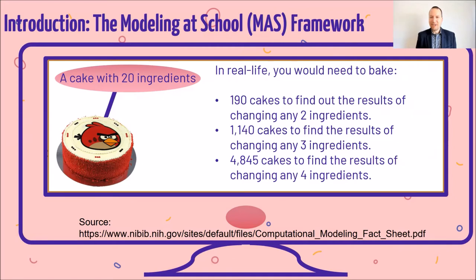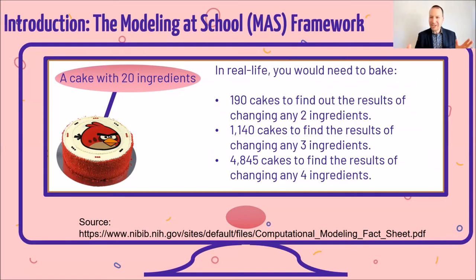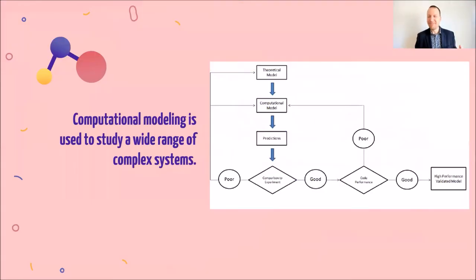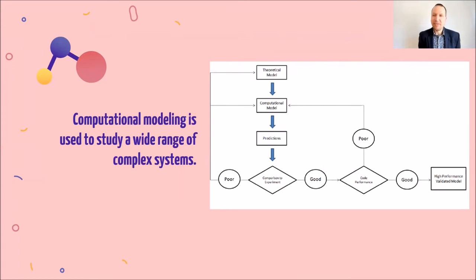If you think about changing any two of 20 ingredients, you will need 190 cakes to be simulated. For three ingredients, it's already more than a thousand cakes. For four different ingredients, it's almost 5,000 different cakes involved. This illustrates that computational modeling has very practical purposes when you want to study various complex systems.